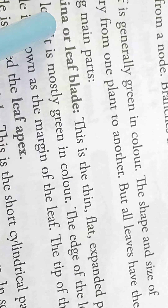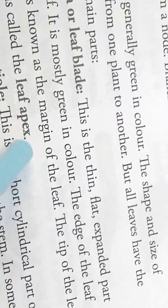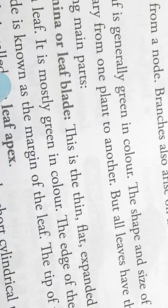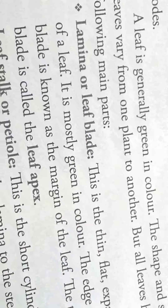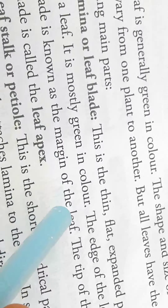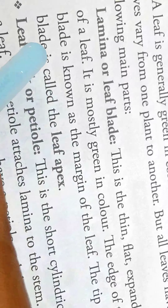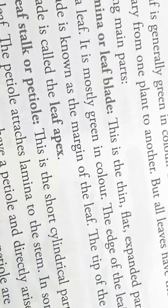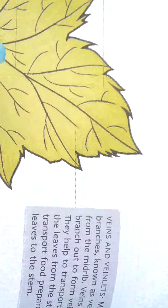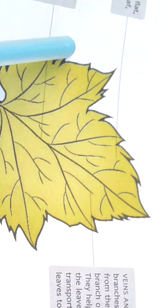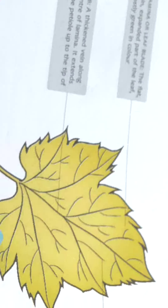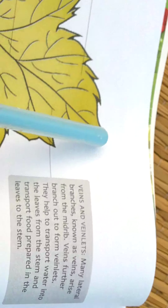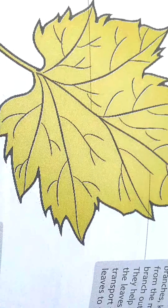What is lamina? Lamina is the main flat surface of the leaf. It is green in color. The edge of the leaf blade is known as the margin of the leaf, and the tip of the leaf blade is known as the leaf apex.